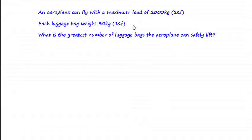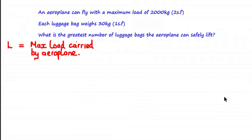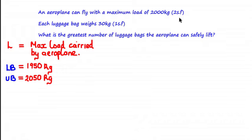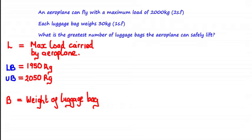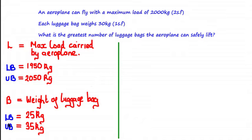One of the first things to notice is that these values — the maximum load of the plane and the weight of each bag — have been rounded, which means there are a range of possible values. We can find the lower and upper bound of each. If we let L be the maximum load carried by the plane, rounded to two significant figures, the lower bound is 1,950 kg and the upper bound is 2,050 kg. If we let B be the weight of the luggage bag, the lower bound is 25 kg and the upper bound is 35 kg.